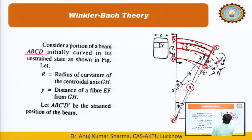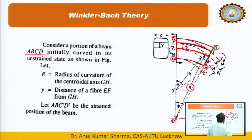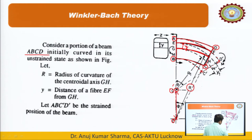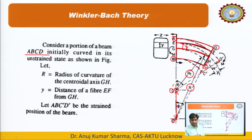The new curved beam has appeared. Due to this shift, the radius of curvature has changed from R to R1. Let R1 be the radius of curvature of GH′ after bending. The fiber GH, which was our centroidal axis fiber initially, has now moved to GH′.